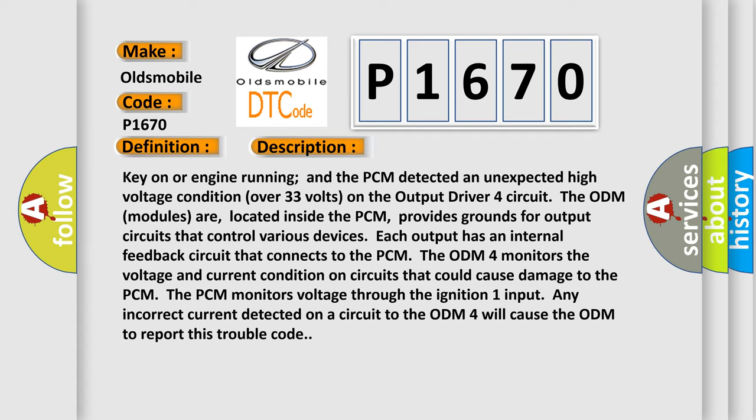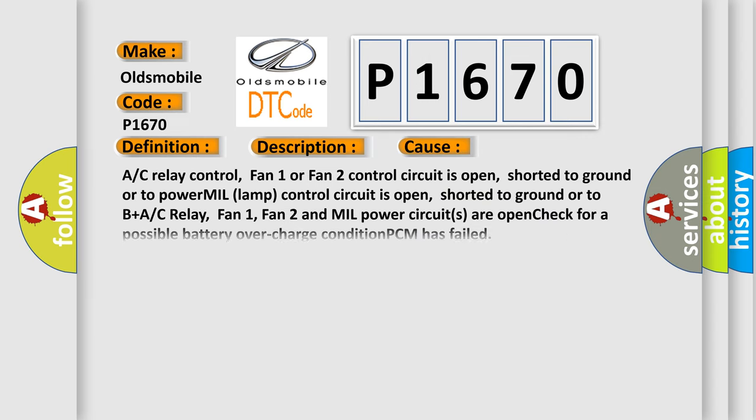The ODM4 monitors the voltage and current condition on circuits that could cause damage to the PCM. When the PCM monitors voltage through the ignition one input, any incorrect current detected on a circuit to the ODM4 will cause the ODM to report this trouble code. This diagnostic error occurs most often in these cases: A/C relay control, fan 1 or fan 2 control circuit is open, shorted to ground or to power; MIL lamp control circuit is open or shorted to ground or to B+; A/C relay, fan 1, fan 2, and MIL power circuits are open. In addition, check for a possible battery overcharge condition or PCM failure.